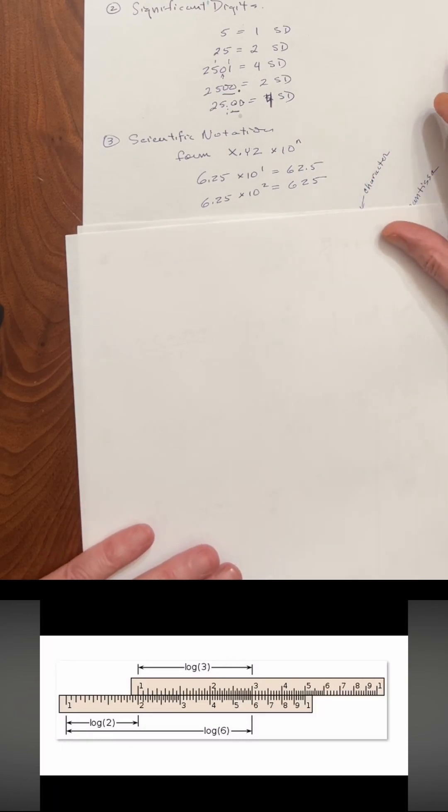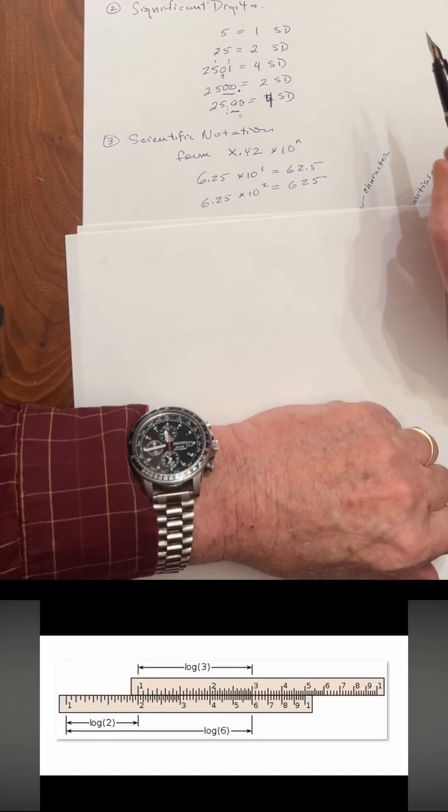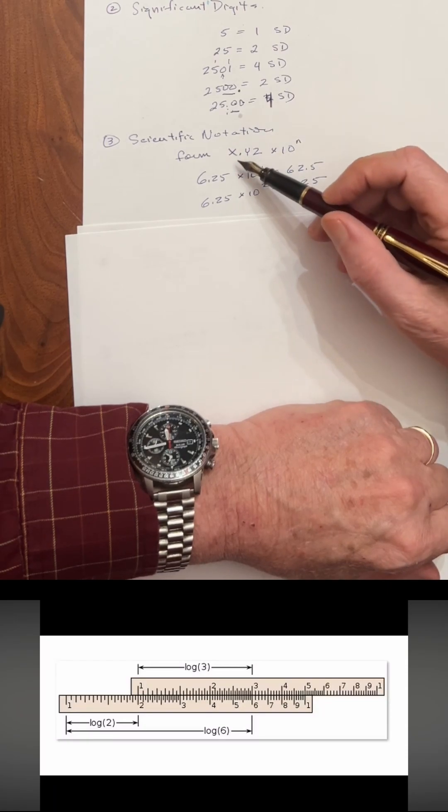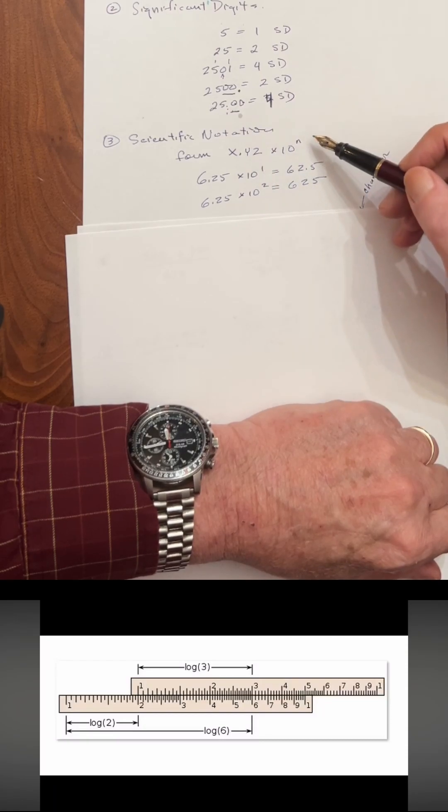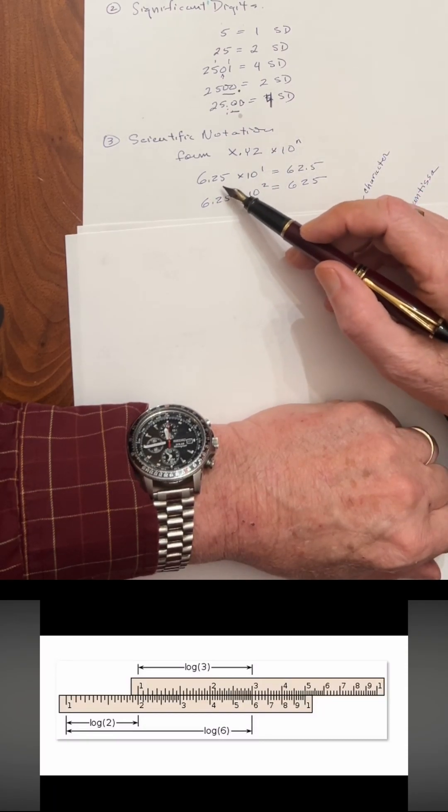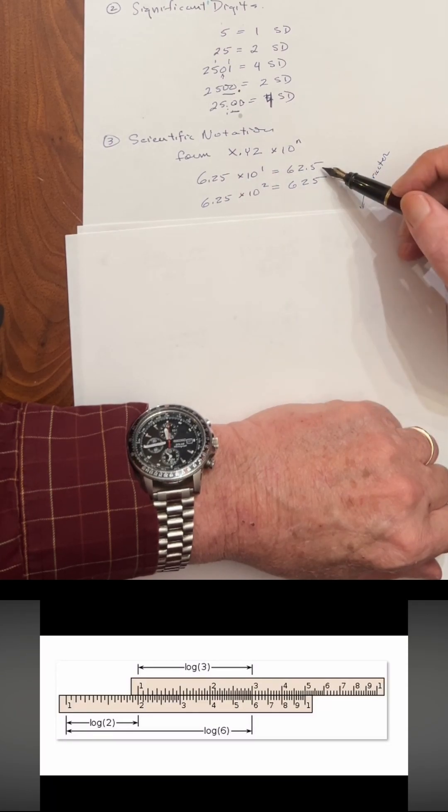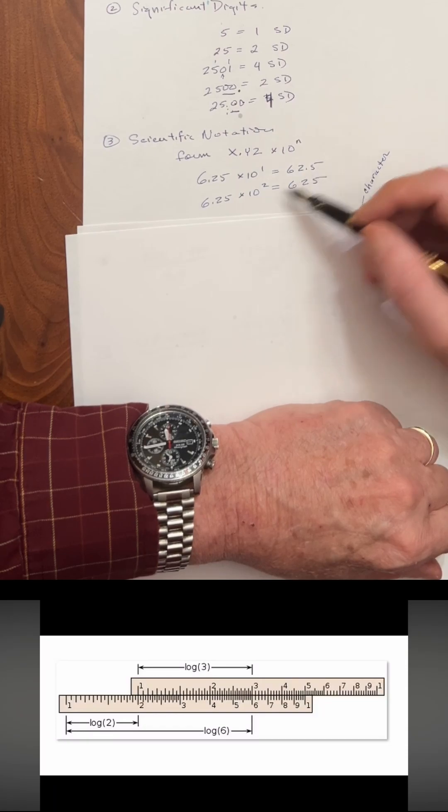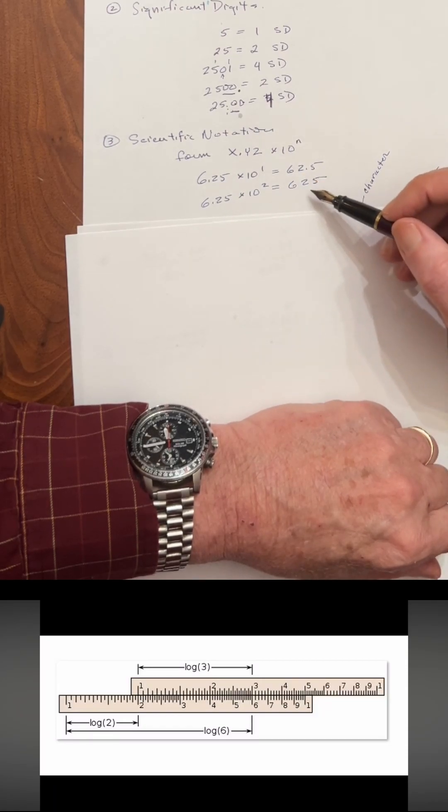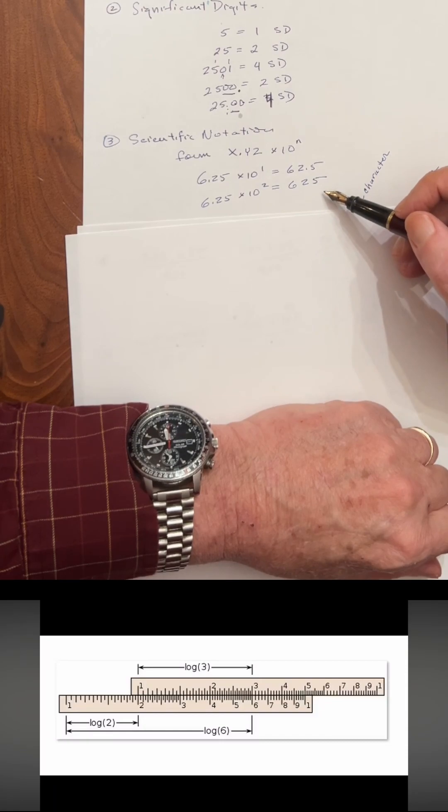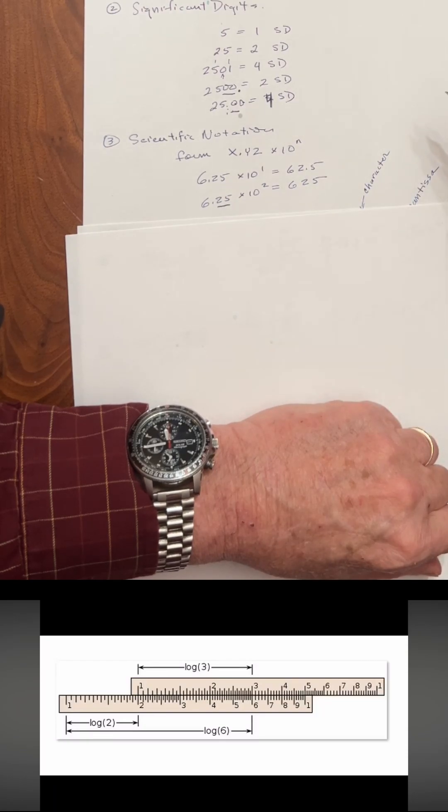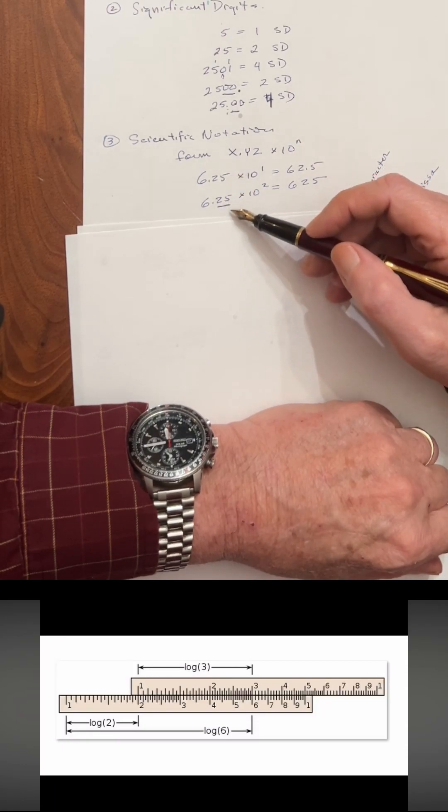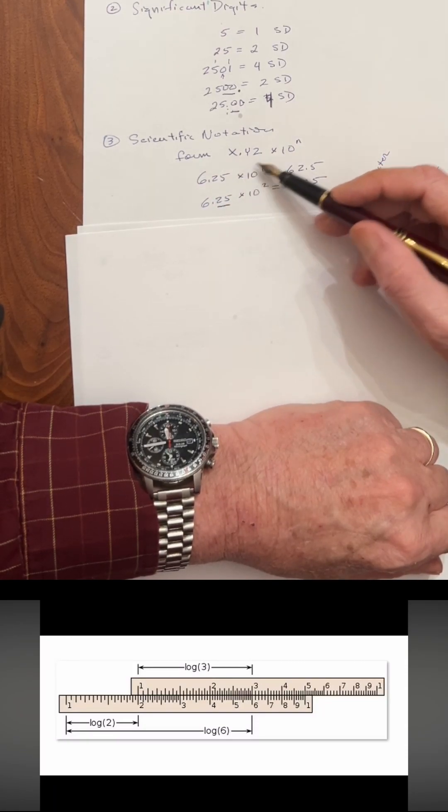Now, combining these all together, we have something called scientific notation. Scientific notation takes the form of x decimal point something times 10 to the power of n. So, for example, 6.25 times 10 to the 1 is the scientific notation for 62.5. The reason that we use scientific notation is that anything to the right of the decimal point is considered a significant digit. So we're demonstrating the significance of the number and the magnitude of the number.